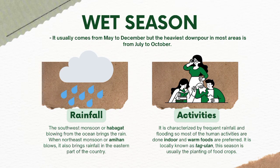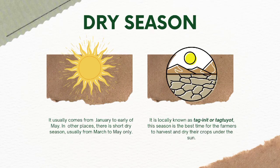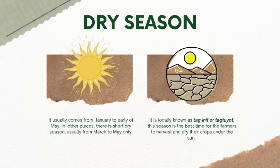On the other hand, we have dry season. Filipinos experience dry season which usually comes from January to early May. In other places, there is a short dry season, usually from March to May only. It is locally known as tag-init or tag-tuyot. This season is the best time for farmers to harvest and dry their crops under the sun.